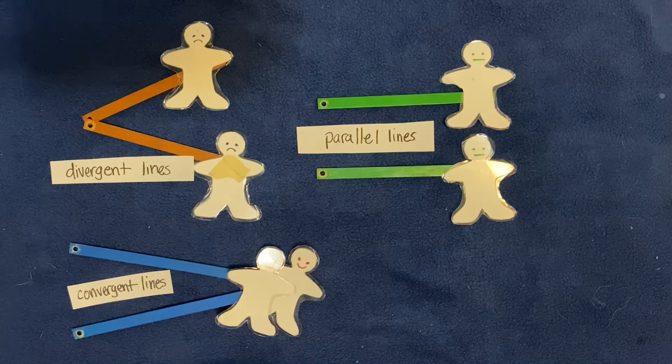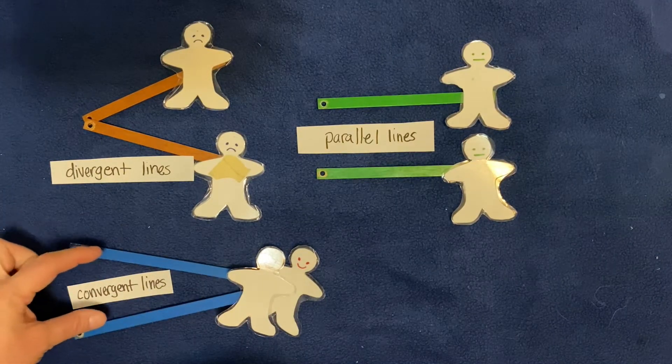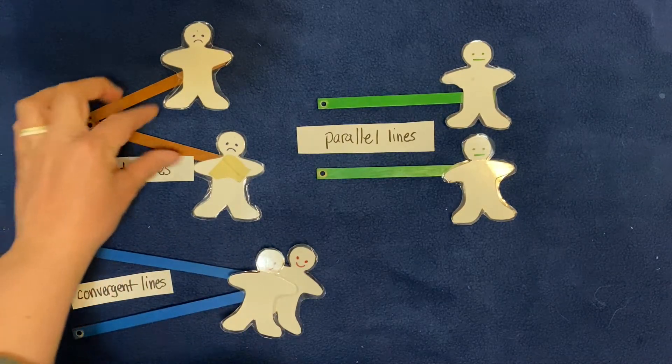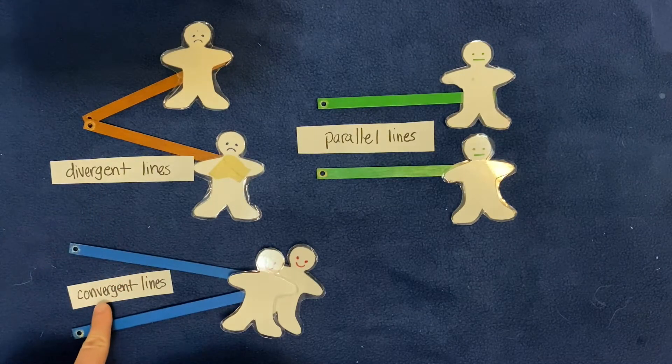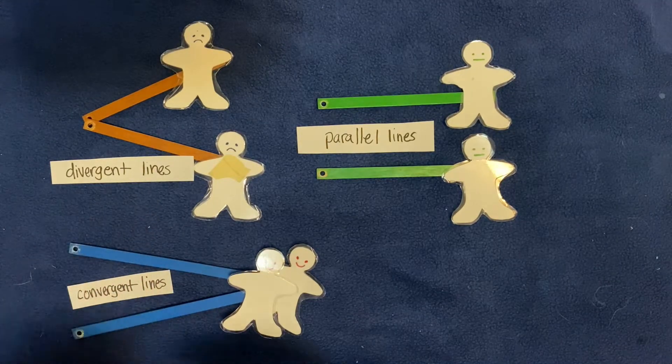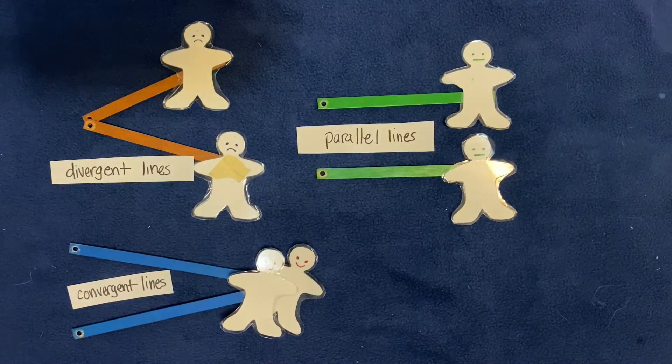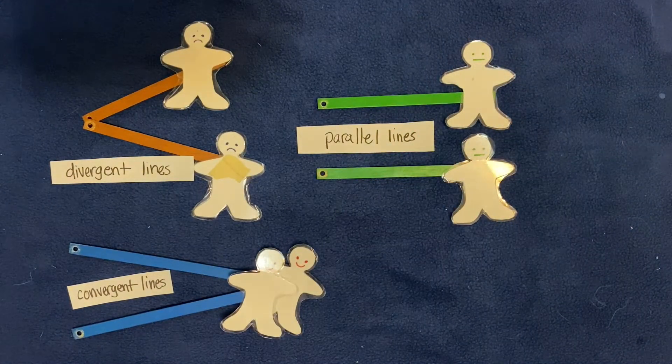So convergent lines—converge means to come together. Diverge means to go apart. You see that root word 'verge' in there? And then parallel lines just run right next to each other forever. They don't ever come in contact and they're perfectly straight.